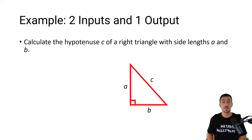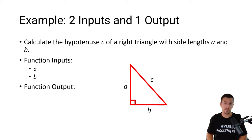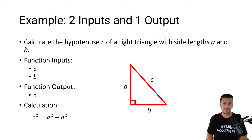Our first example problem has two input arguments and one output argument. The purpose of this function is to calculate the hypotenuse C of a right triangle with side lengths A and B. The two input arguments are side length A and side length B, and the one output argument is the hypotenuse C, where the hypotenuse is computed based on the values of side length A and B in accordance with the Pythagorean theorem. Let's solve this problem in MATLAB.